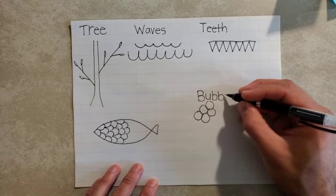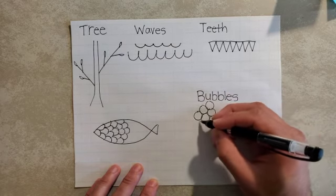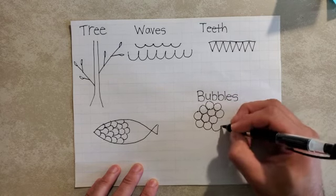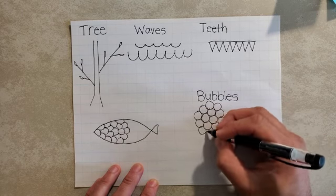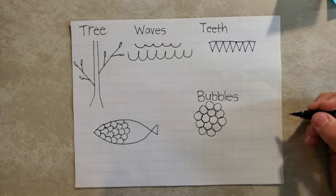If you've washed your hands or taken a bath before, then you may have recognized this repeated pattern. They all look like bubbles. Just by repeating circles over and over again, you're showing what bubbles look like.